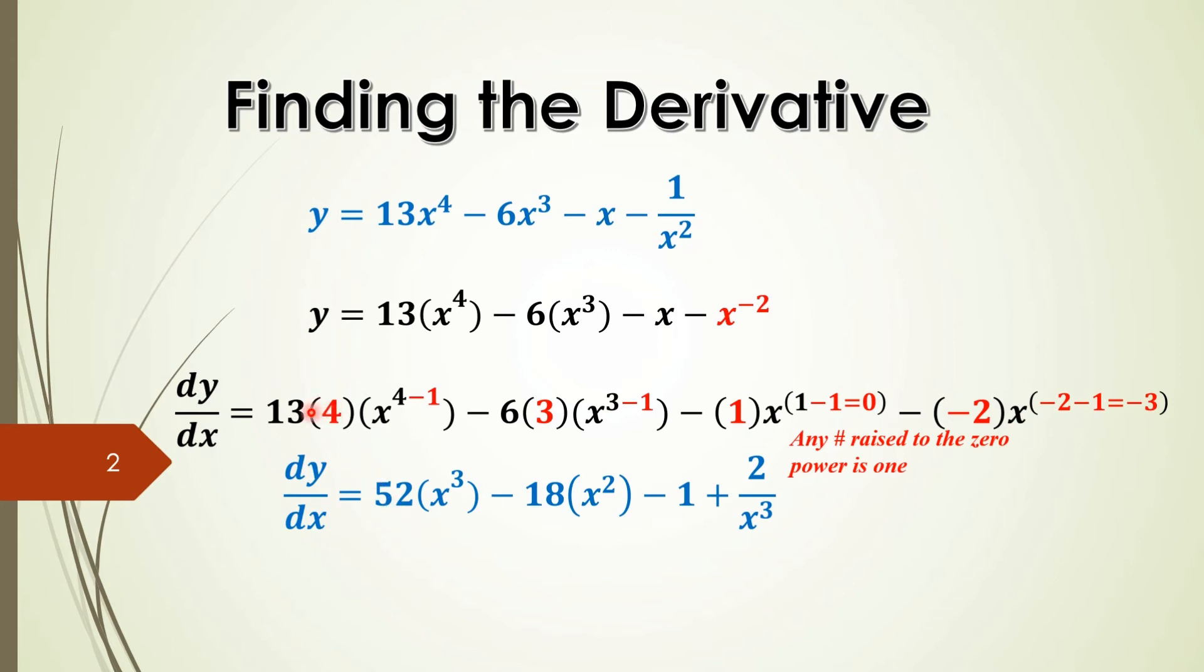We're going to have 4 times 13 is 52, x cubed, because it reduced by 1. And then 3 times 6 is 18, minus 18 x squared, reduced by 1.